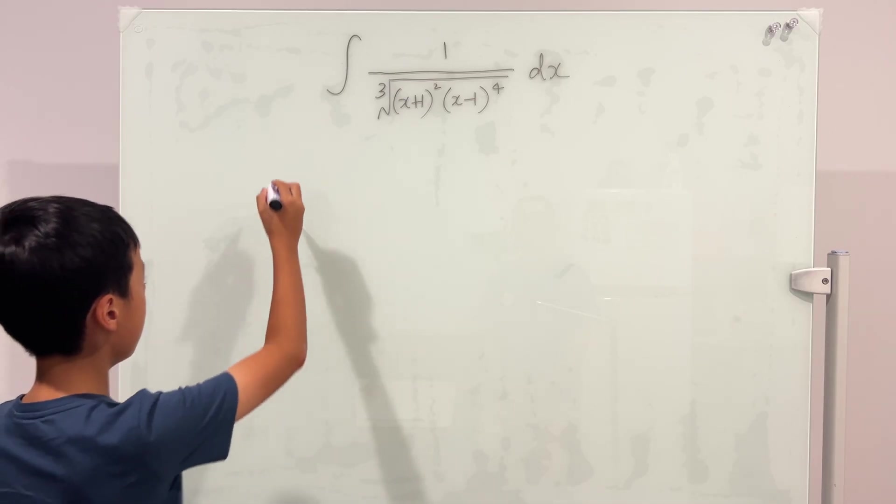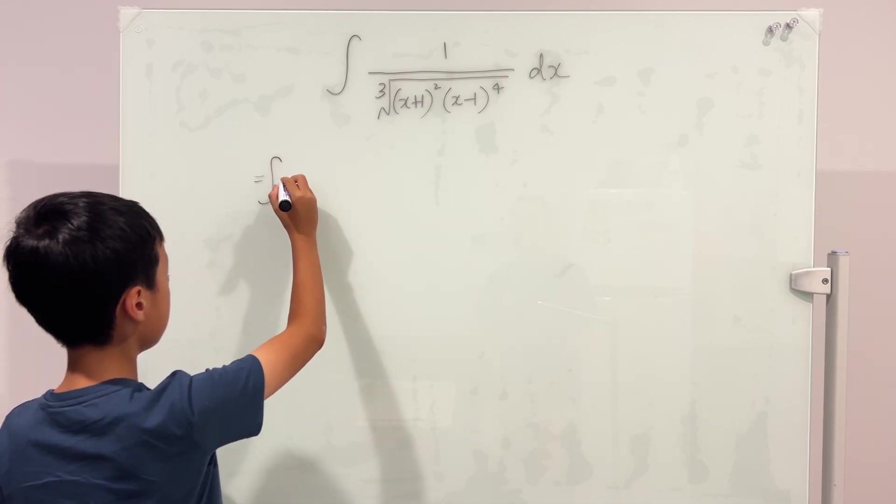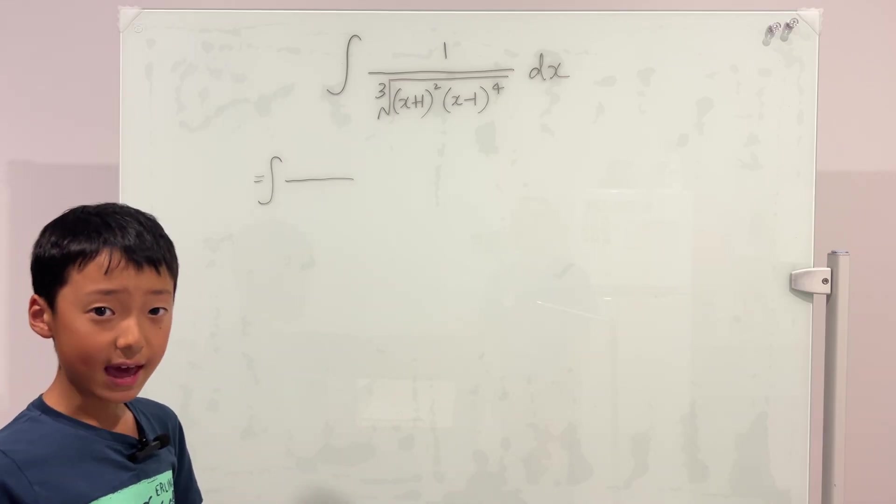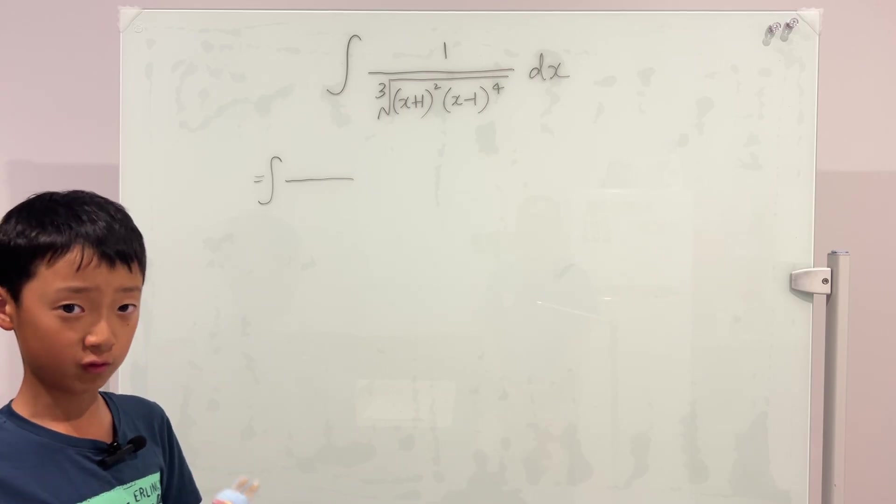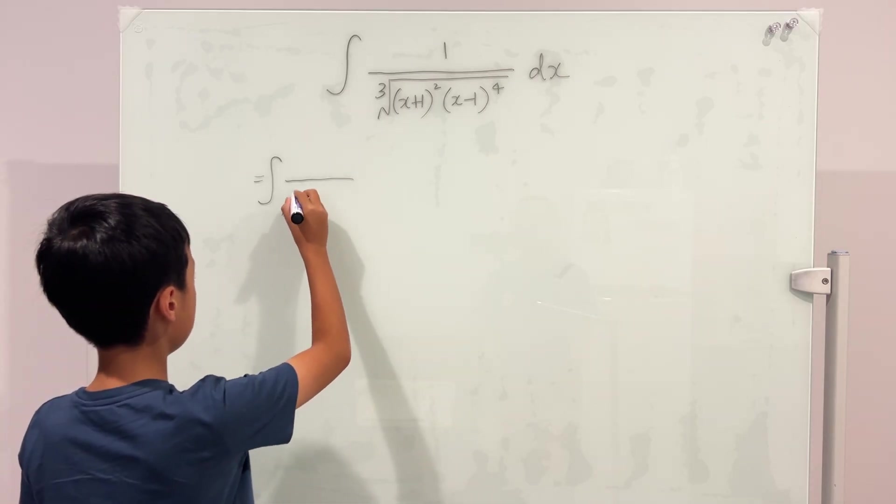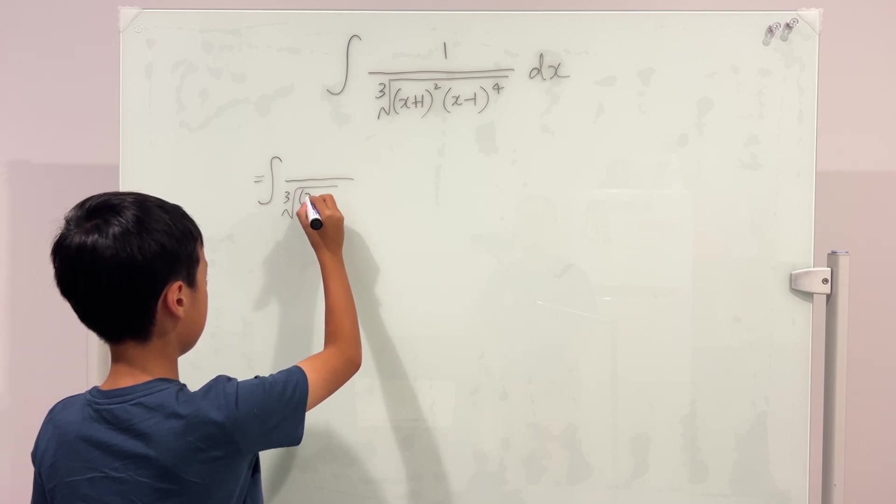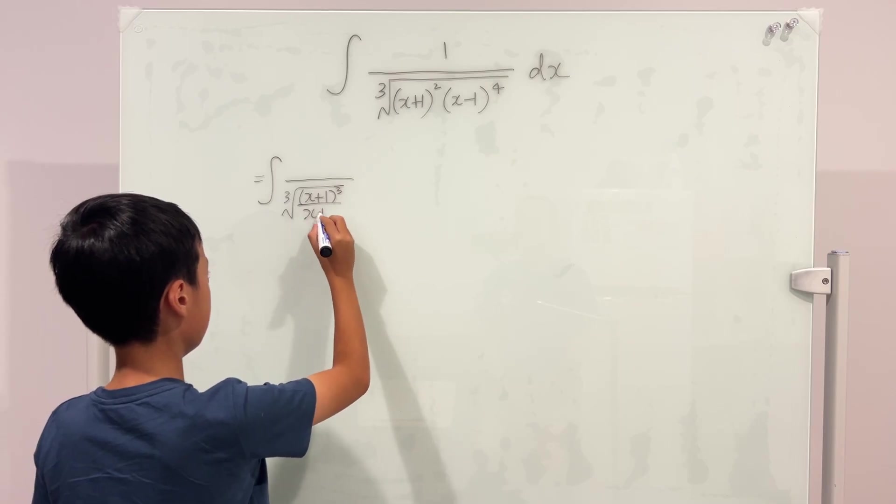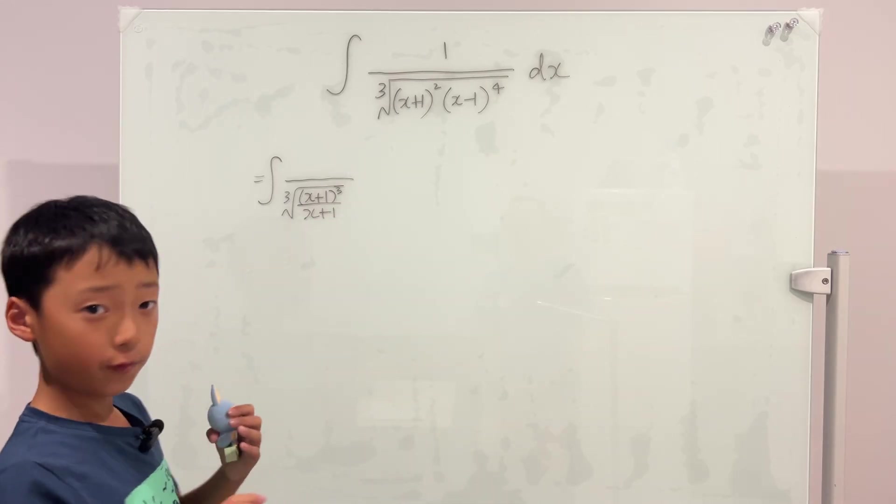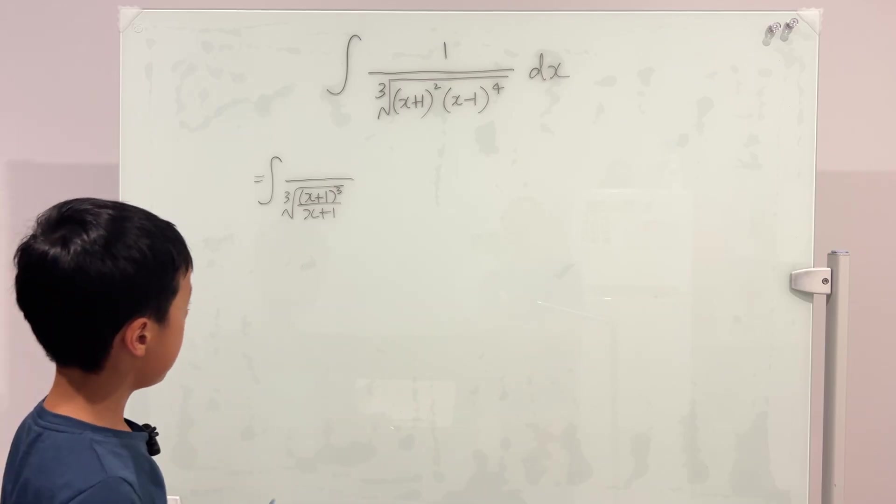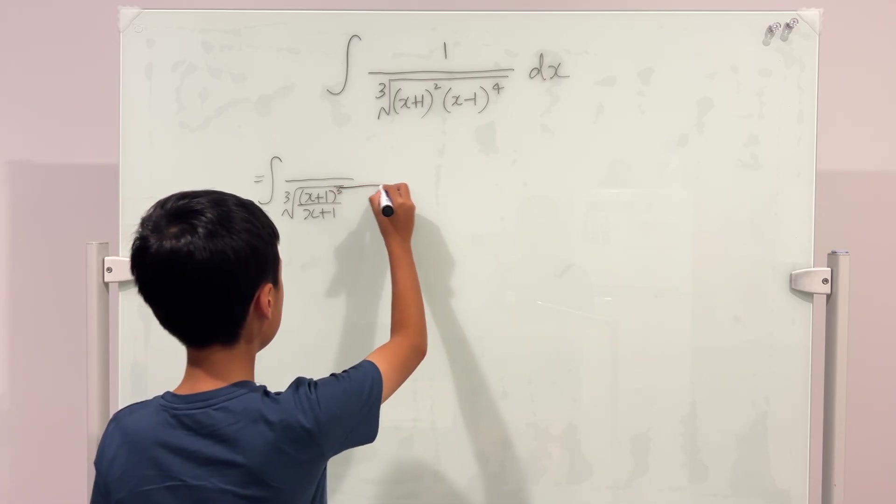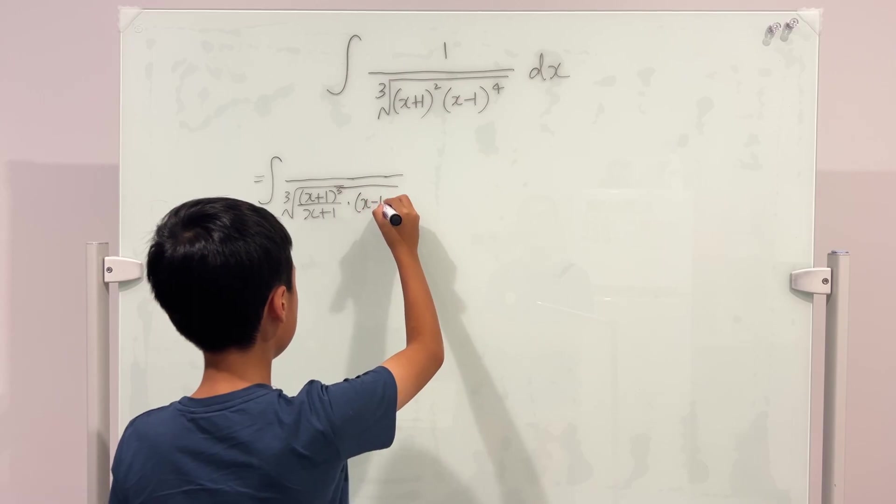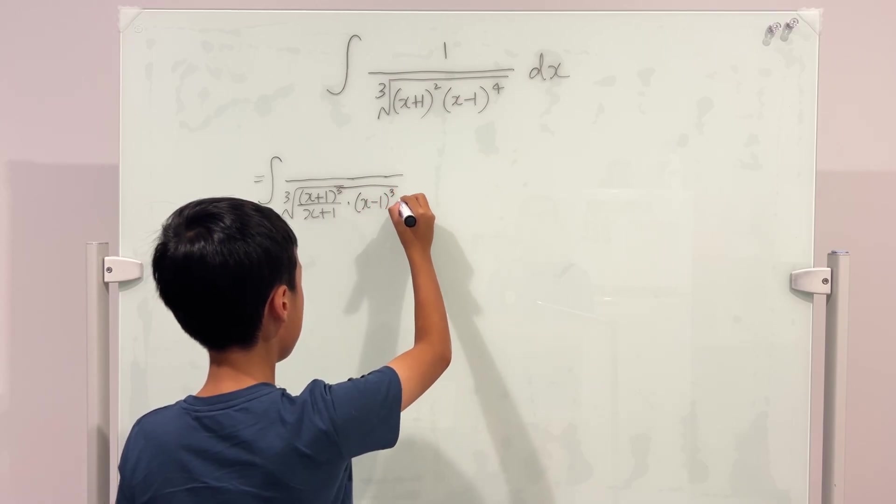It's equal to the integral of, well, x plus 1 squared can be written as x plus 1 cubed over x plus 1. And then x minus 1 to the power 4 already includes an x minus 1 to the power 3, so you can actually write it as x minus 1 to the power 3 times x minus 1.